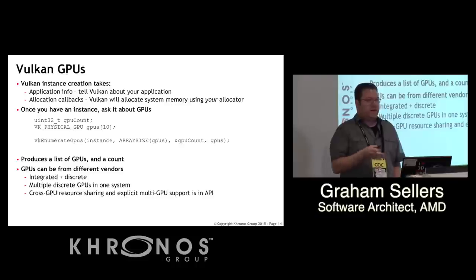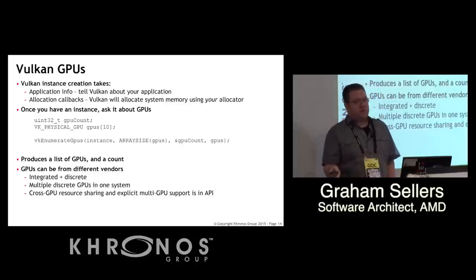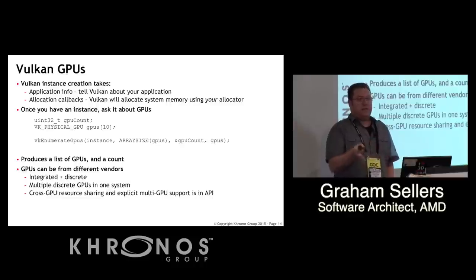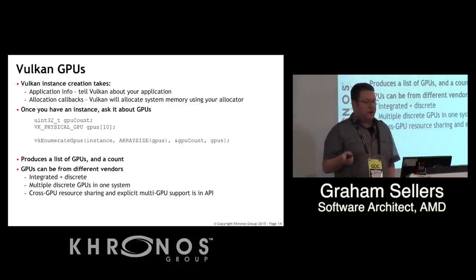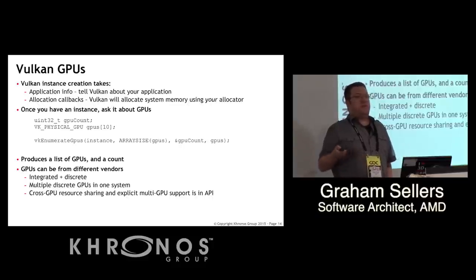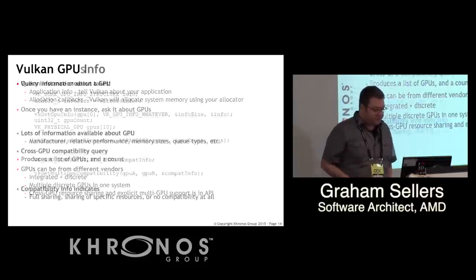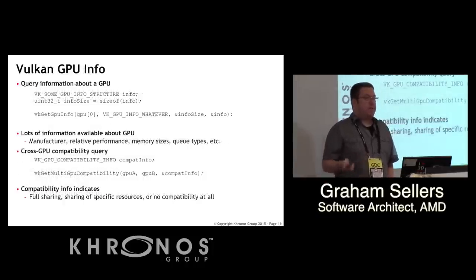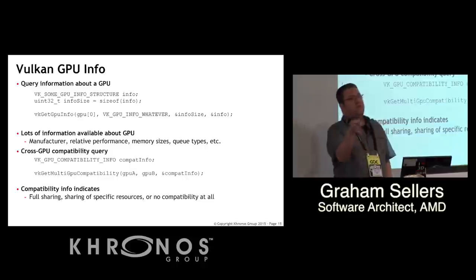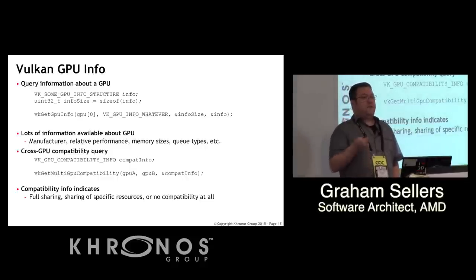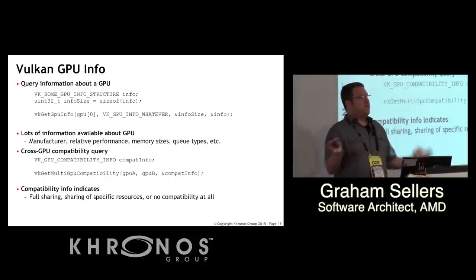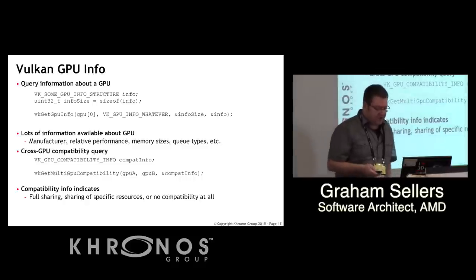Once you have the instance, you ask it how many GPUs are in the system. It gives you a handle to each one. This lets you see all GPUs — multiple discrete cards from different vendors, integrated GPUs alongside discrete cards. Explicitly talking to one GPU or another is part of the API. We're looking into resource sharing between GPUs from the same vendor and possibly across vendors. You can query GPU information: who made it, relative performance, memory sizes, supported queues, and cross-GPU compatibility.